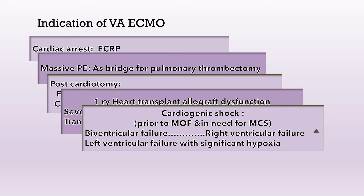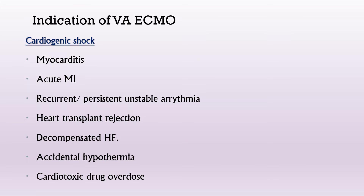The first indication is cardiogenic shock, which should be addressed before multi-organ failure, or in patients who need mechanical circulatory support. This applies to patients with biventricular failure, right ventricular failure, or left ventricular failure with significant hypoxemia. Causes include acute myocarditis, acute myocardial infarction with mechanical complications, refractory unstable arrhythmias, heart transplant rejection, decompensated heart failure, accidental hypothermia, and cardiotoxic drug overdose.